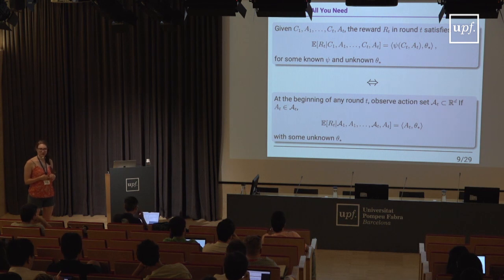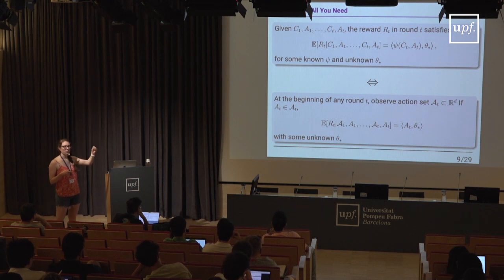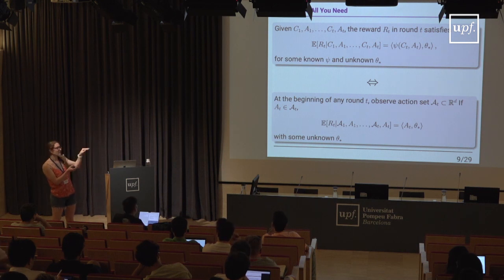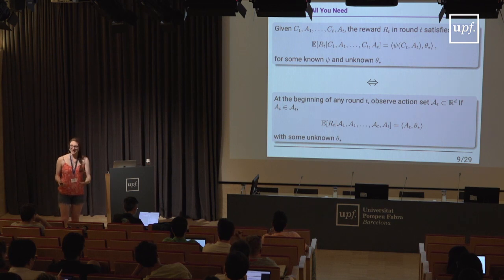Implicitly, d means that ℝ^d is spanned by the action spaces. If your actions were in a smaller-dimensional space, θ* would be zero in some directions — that would be a sparse problem, which is beyond what we discuss today. Today we assume the d-dimensional space is nicely spanned, meaning you can observe scalar products of θ* with all directions of the space.